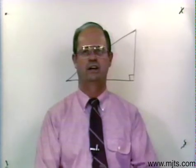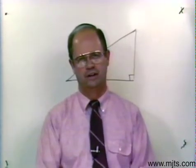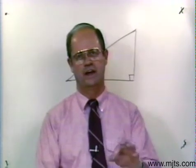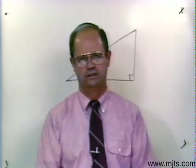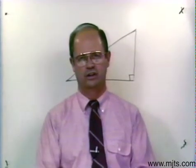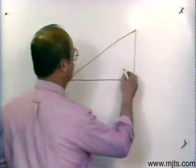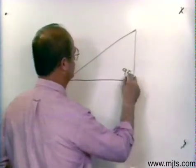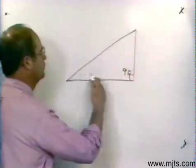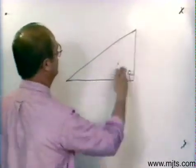Now, any triangle has angles that will add up to be 180 degrees. A right triangle has one of those angles at a value of 90 degrees. In other words, it's a right triangle. It's at right angles. The sides are at right angles to one another.